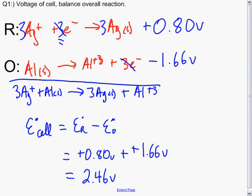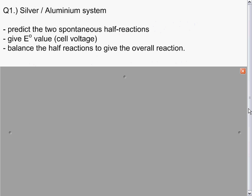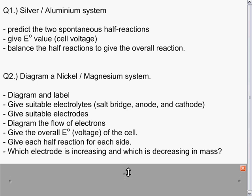And that's how to do the first example question. The next question, the answer to which will be posted on the next video, is diagram fully a nickel-magnesium system. Label all the parts such as the electrodes, the cathode and the anode, the electrolyte. So we want what's in the salt bridge, what's in the anode side, the cathode side. Diagram the flow of the electrons, give the overall E° of the cell, give each half-reaction for each side, and let me know which electrode is increasing and which is decreasing in mass.